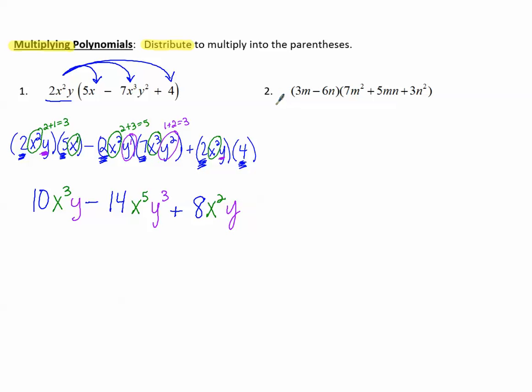Now, for example 2, we're going to do something similar to multiply these polynomials. But this is a binomial times a trinomial. So we've got two terms to distribute. Let's begin by distributing the 3m to the three terms in the trinomial.